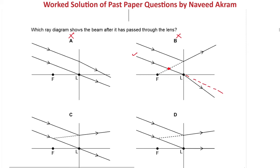Option C seems correct because if we trace back, the two rays meet at a point which is on the focal plane. In option D, the two rays do meet at the focal plane, but the ray passing through the principal focus is being deviated and becomes parallel to the principal axis, when it should go straight. So option D also has a problem, and option C is the right answer.